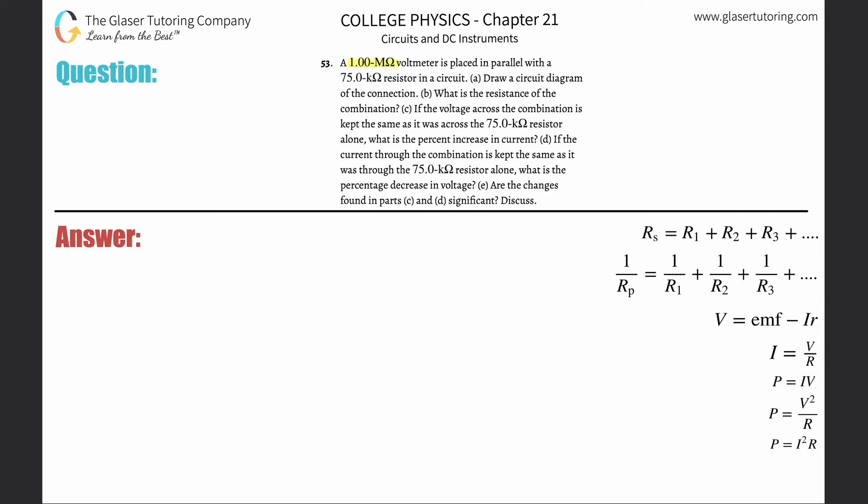Number 53: a 1 megaohm voltmeter is placed in parallel with a 75 kilohm resistor in a circuit. Draw a circuit diagram.